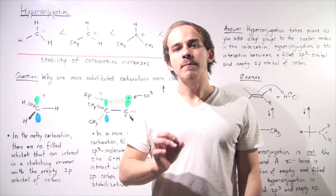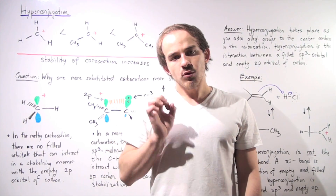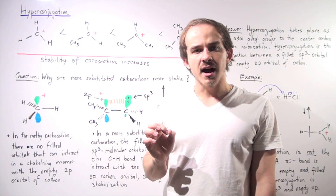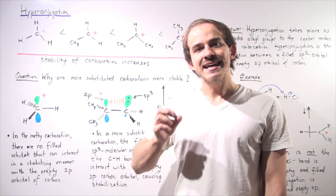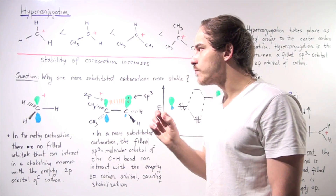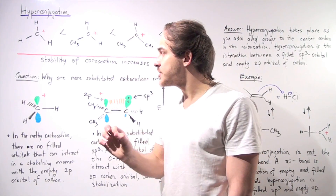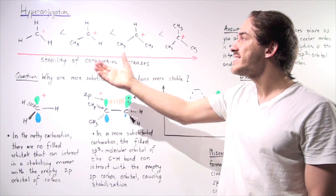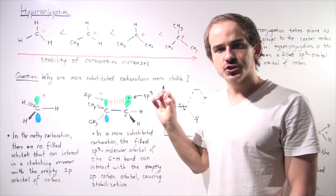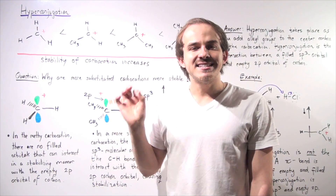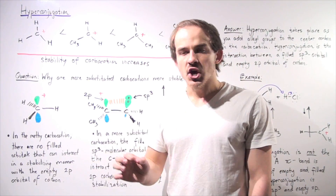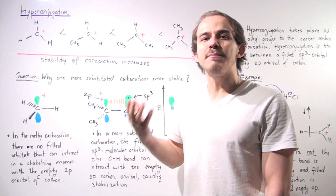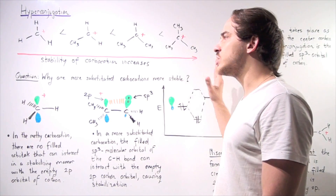Thus far we have discussed carbocation stability, and we said that as we go from methyl to primary to secondary to tertiary carbocations, our stability increases. But why is this true? We haven't answered why more substituted carbocations are more stable than less substituted ones. To answer this question, let's examine the molecular orbitals of these carbocations and see if we can find some type of stabilizing effect in the more substituted ones.